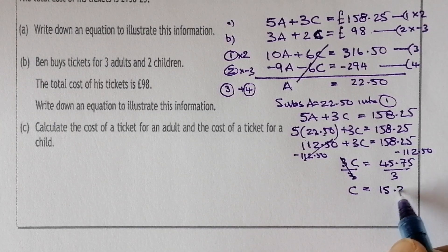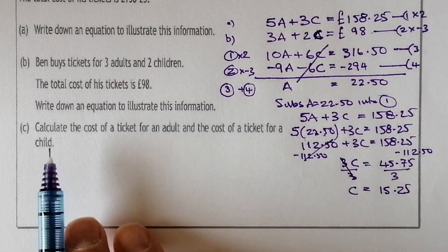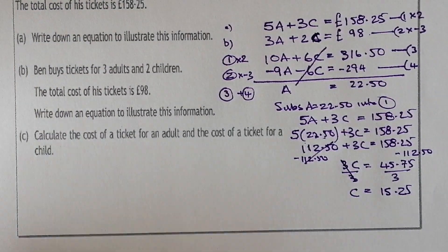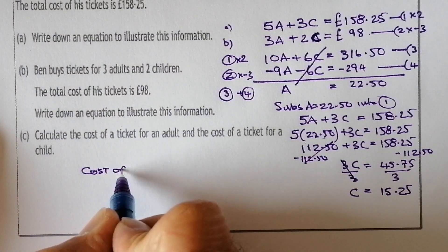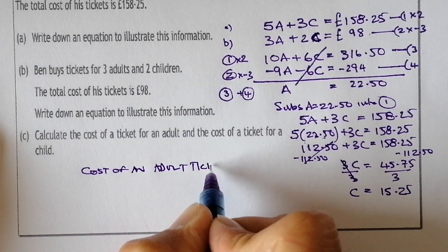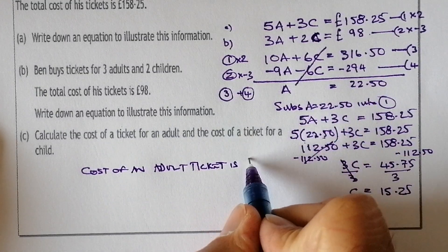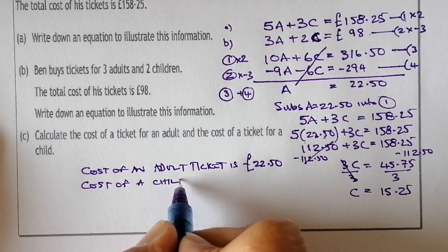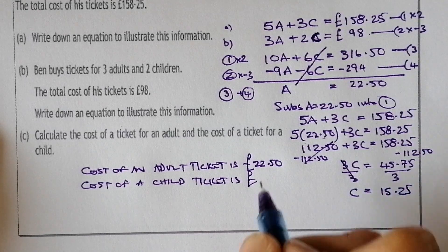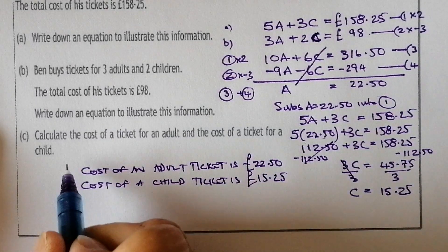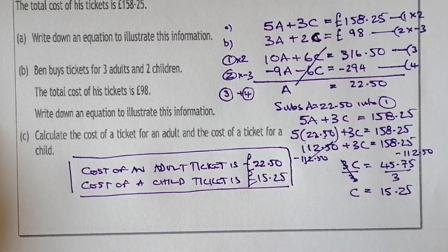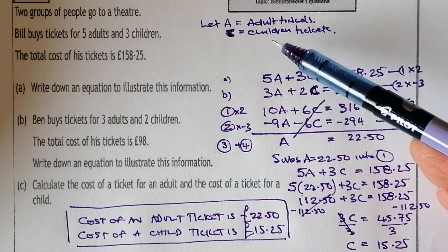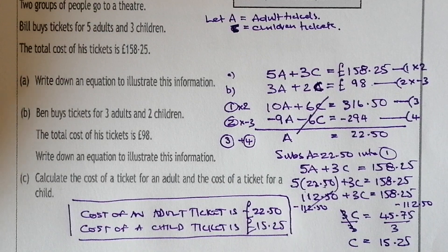I've found a and c. For part C we were asked to calculate the cost of each ticket, so I'll write a final statement. The cost of an adult ticket is £22.50 and the cost of a child ticket is £15.25. Remember, you must answer in context — don't just leave it as a or c, or you risk losing a mark.